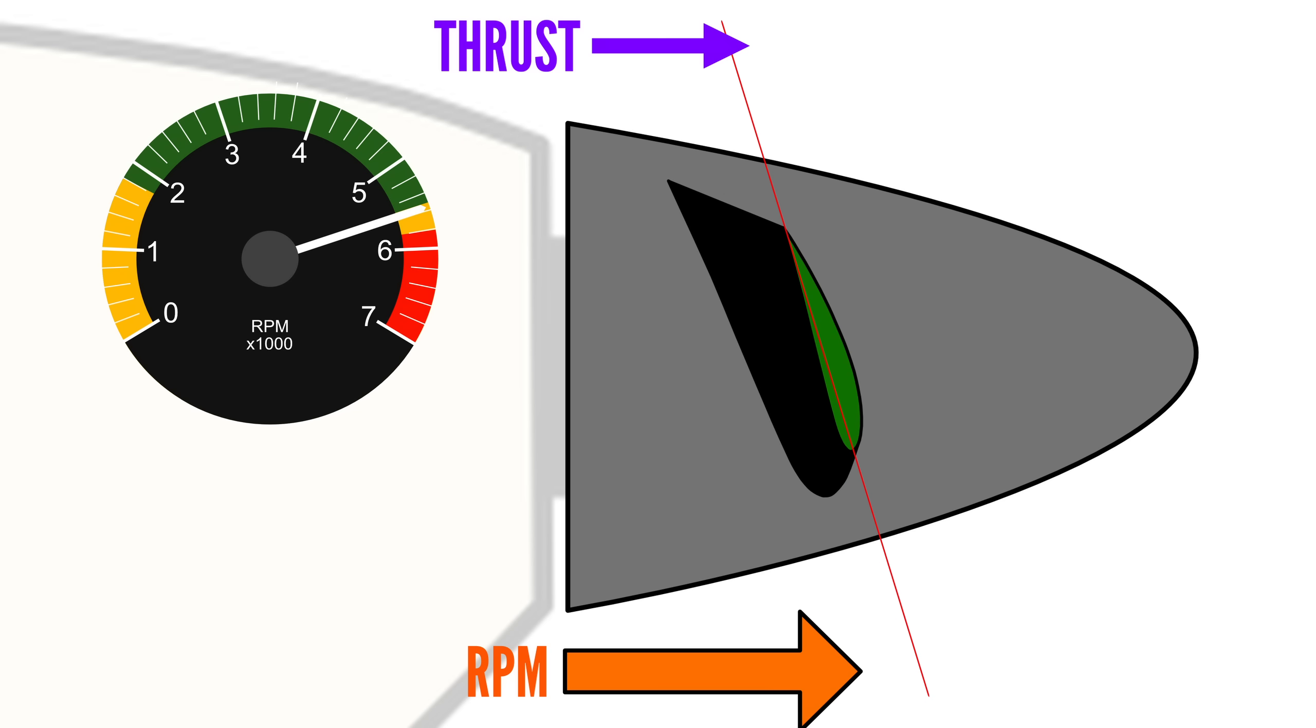This coarser pitch raises the propeller load, reducing engine RPM. And just like that, we have an automatic constant speed propeller.